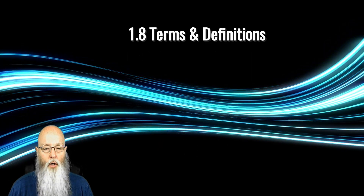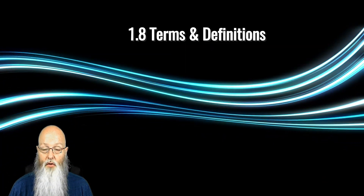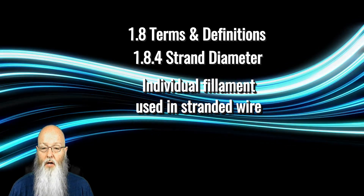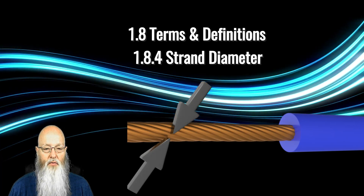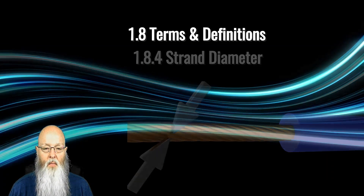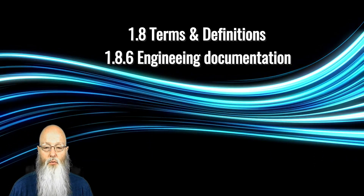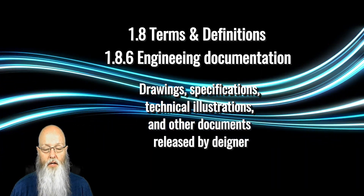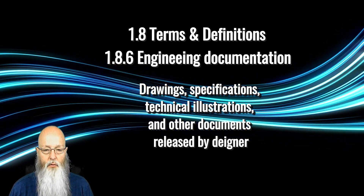1.8.4 has another addition that isn't new to the document, but is a defining of a long-used term. Strand diameter has been included in the definition of diameters. A strand diameter is the outside diameter of an individual metal filament used in a stranded wire. Engineering documentation, 1.8.6, has replaced the more cumbersome phrase 'drawings, specifications, technical illustrations, and other documents released by the designer that establish the design requirements.'